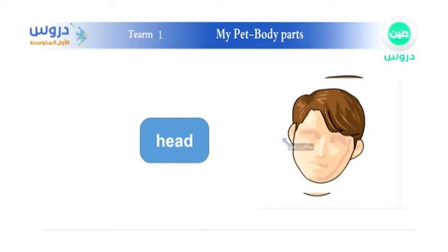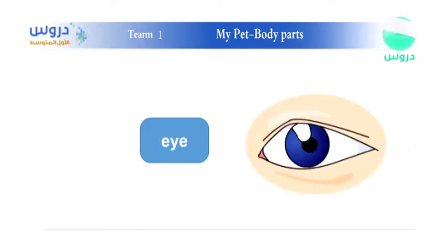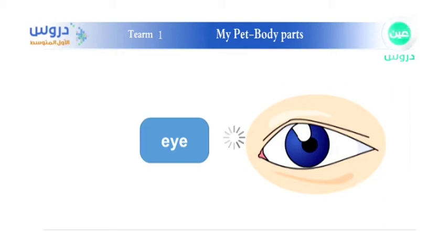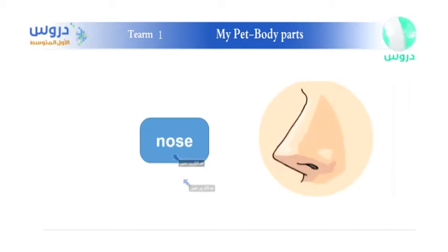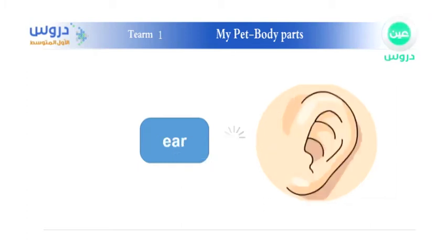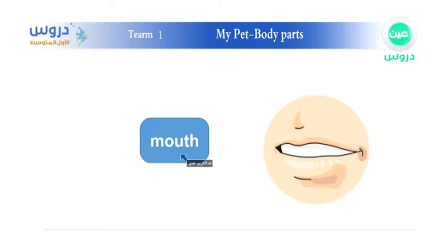Parts of the body. This is a head. This one is eye — same spelling as the pronoun 'I'. This one is nose — pay attention to the pronunciation: nose. This one is ear. And this one is mouth.